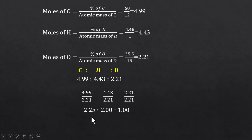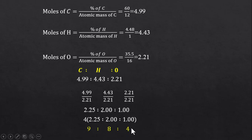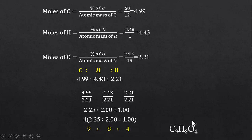If you look closely, we can use another multiplier — 4 — to convert this fraction into a whole number. Multiplying these numbers by 4, we get 9, 8, and 4. So we have converted these moles into a simple whole-number ratio, giving us C₉H₈O₄ as the empirical formula of aspirin.